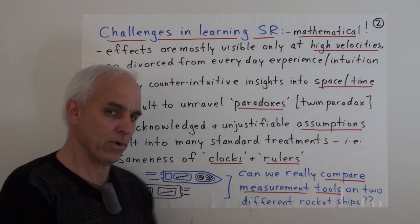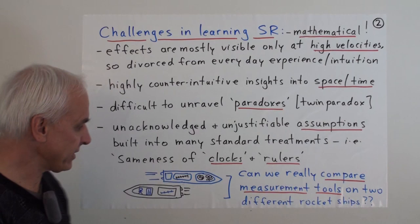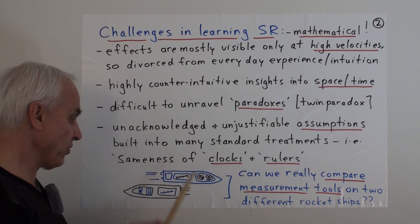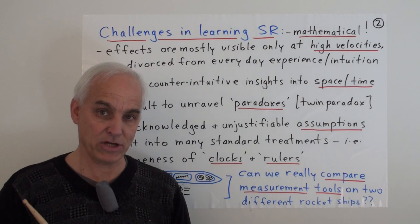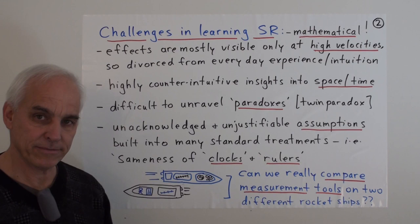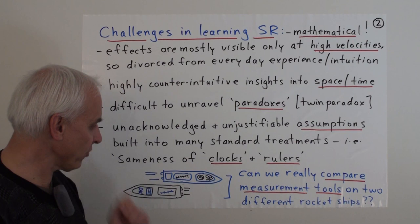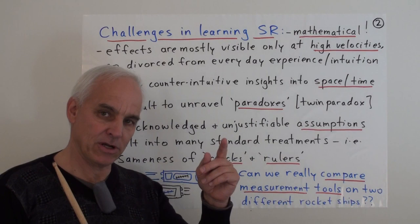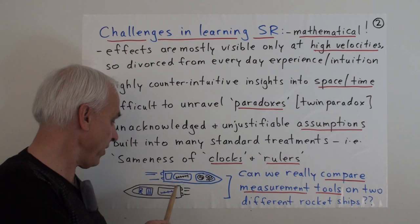So, in particular, what I'm thinking about is the sameness of clocks and rulers. This is a very common situation that one runs into, that treatments assume that there is such a thing as a clock which can be reproduced, and we can put one version of it in one rocket ship going that way, and another version of the same clock in another rocket ship going very high velocity in a completely different direction. Same thing with rulers, that there's some kind of standardized rulers that we've just handed out to all the participants of our global experiment.